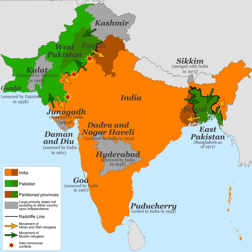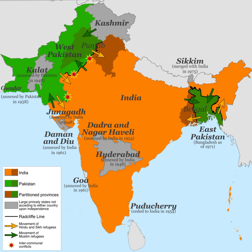It is basically a superimposed boundary. A superimposed boundary is a boundary which has been imposed or set on an area by a conquering power — that is, the British had set this Radcliffe Line between India and Pakistan.